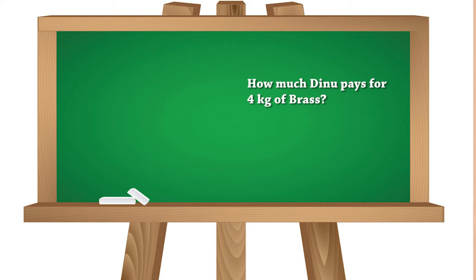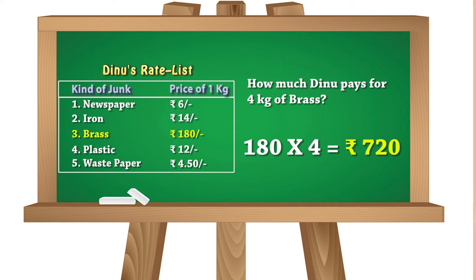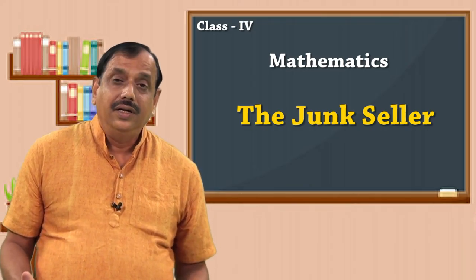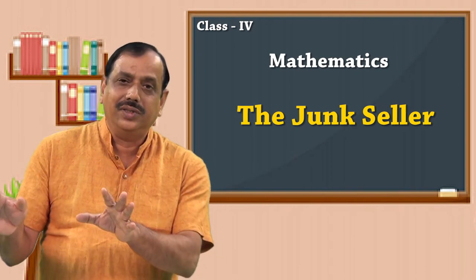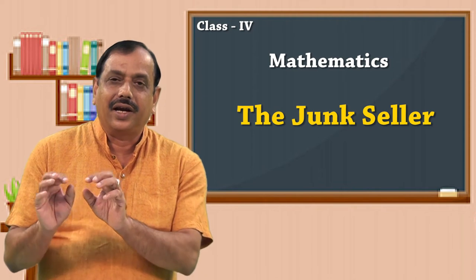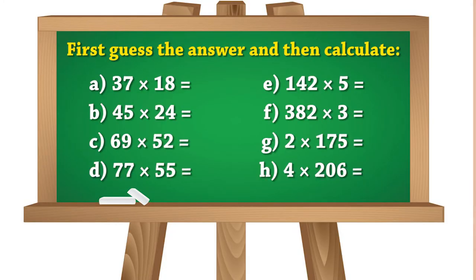Similarly, how much does Dinu pay for 4 kg of brass? For every kg of brass he pays 180 rupees. So for 4 kg, 4×180 equals 720. He pays 720 rupees for buying 4 kg of brass from Kiran. Like this, Kiran sells all her collected junk to a bigger shop.